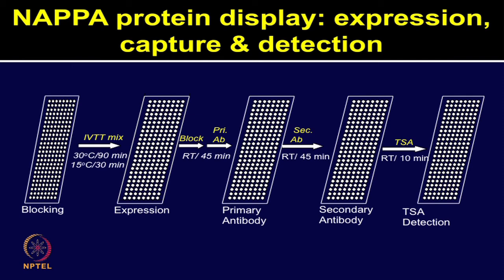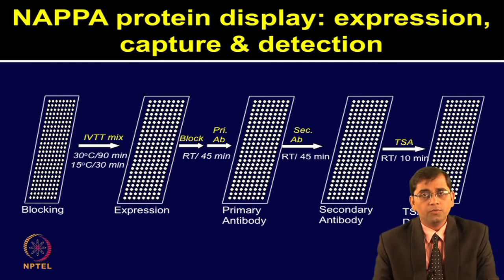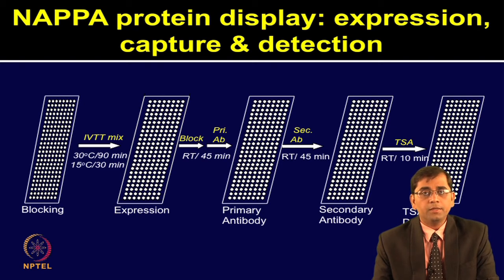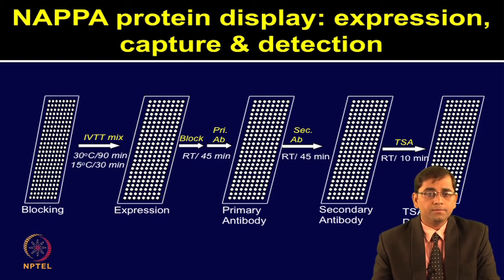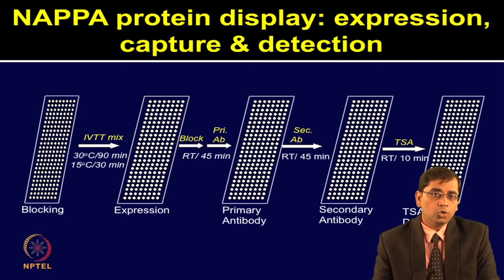NAPPA method is very simple and similar to western blots. After printing the chips, the first step is blocking using BSA or milk in PBS to avoid non-specific binding. After blocking, in vitro transcription and translation mix can be added on the chip surface. Incubation involves two steps: incubation at 30 degrees followed by 15 degrees for 30 minutes. It has been observed that lowering the temperature from 30 to 15 degrees helps in the protein capture process — there are two steps: expression in the cell-free environment and then protein capture facilitated by lowering the temperature.